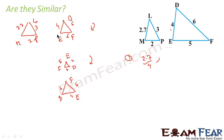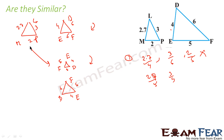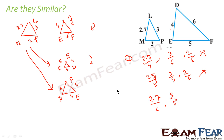The next side proportionate: LP and DF. This is 3 by 6. And this is 2.5, and they are not the same. In the next scenario, comparing LM by this side, this is 2.7 by 5. Here also if you see, they are not the same. So in any other scenario it is not matching either. So I can say that these triangles are not similar.